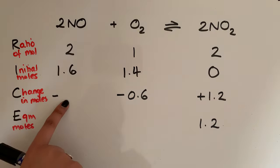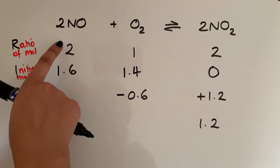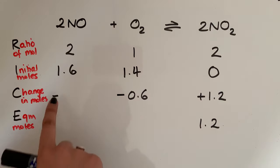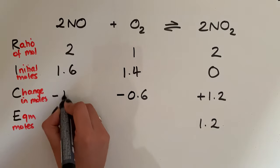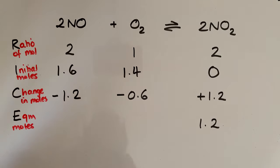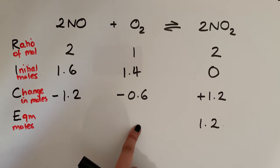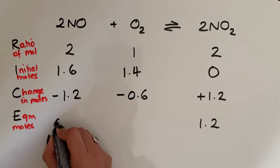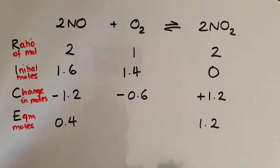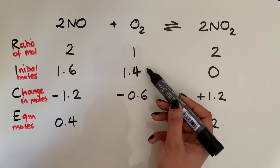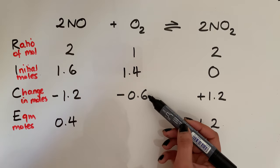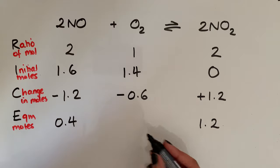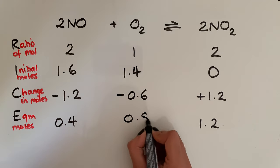For NO, its ratio is also 2, and 2 is worth 1.2, so we're going to lose 1.2 moles of NO. Now we apply those changes to get the equilibrium moles. For NO: 1.6 minus 1.2 leaves us with 0.4. For O2: 1.4 minus 0.6 leaves us with 0.8. We now have our equilibrium moles for everything.